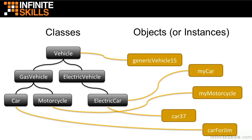In most object oriented languages, including JavaScript, it is conventional to start class names with capital letters and object names with lowercase letters. On the left, we see a class hierarchy. Class vehicle is our most generic class, and gas vehicle and electric vehicle are subclasses of vehicle. Similarly, car is a subclass of gas vehicle. You can say that a car is a gas vehicle, and it also is a vehicle, but a vehicle isn't necessarily a car.